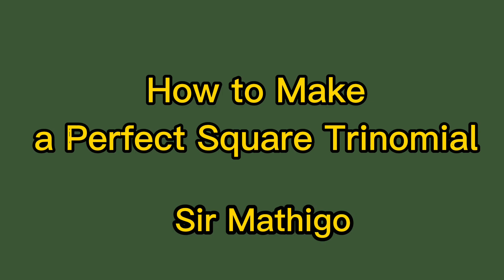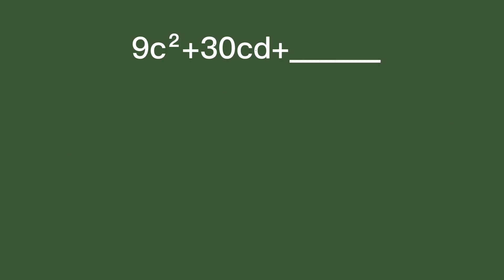Today I'm going to show you how to make a perfect square trinomial given two terms. For example, you are asked to complete the statement 9c squared positive 30cd positive blank.